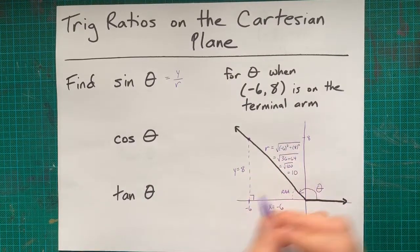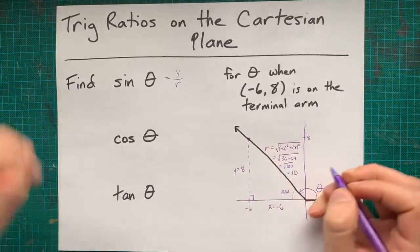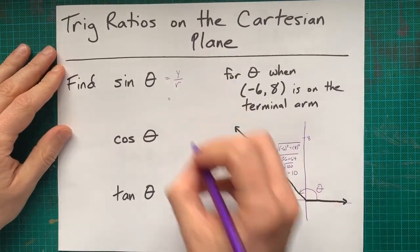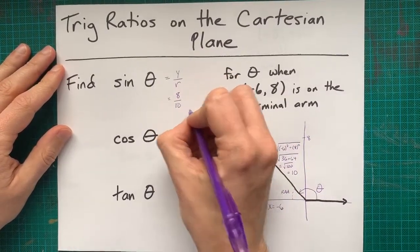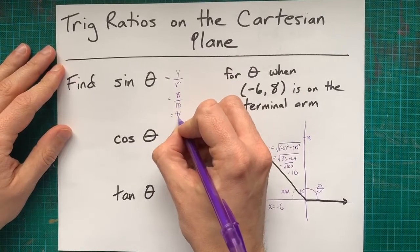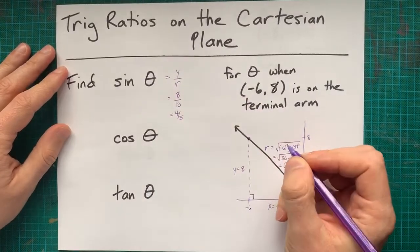Opposite over hypotenuse is the same as y over r. The y value was 8, the r was 10, and that reduces to give you 4 fifths, or 0.8.